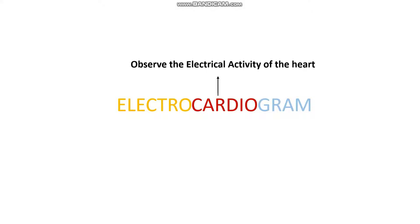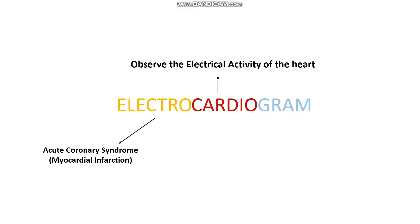Some of the very common things an ECG may be used for is to observe ischemic or hypoxic damage to the heart in things like acute coronary syndromes, specifically in a condition that we refer to as the ST elevated myocardial infarction, or STEMI.